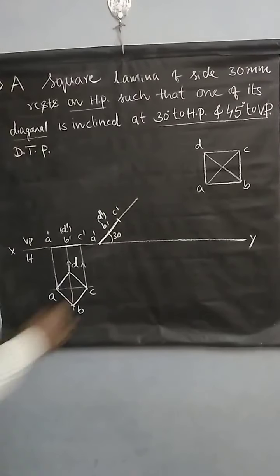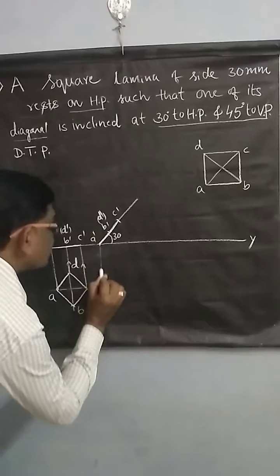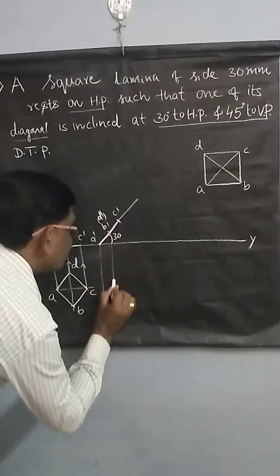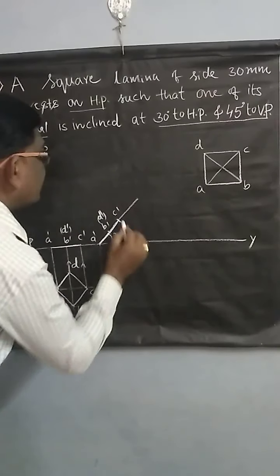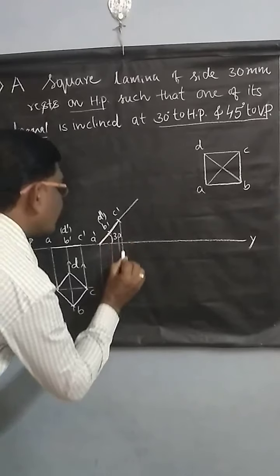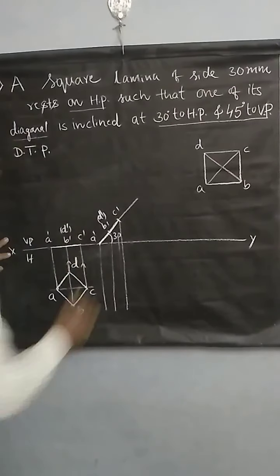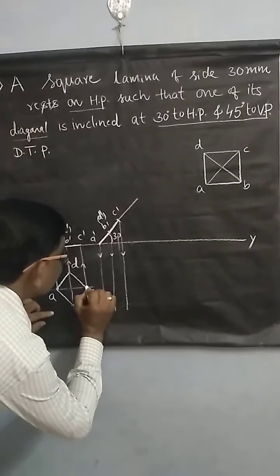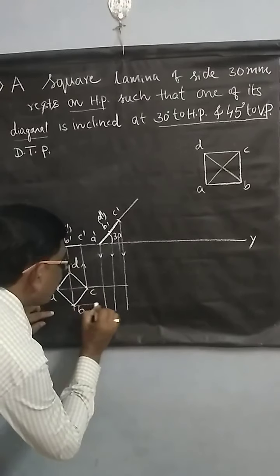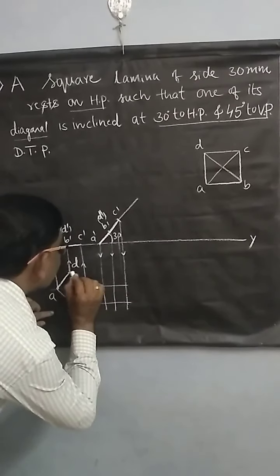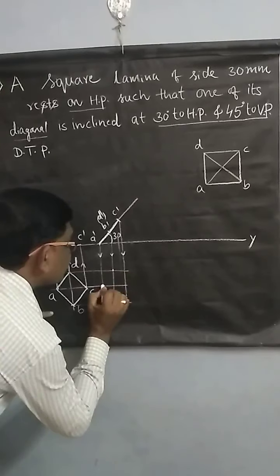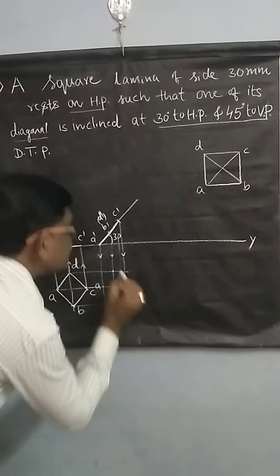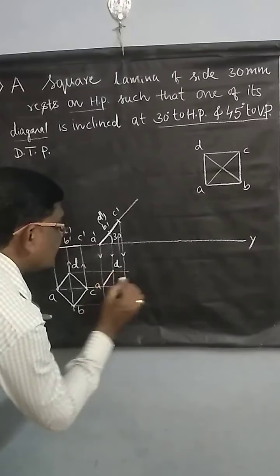Then you draw the top view. Draw the projection lines downwards from all the points. Similarly, draw the projection lines from this top view and mark all the points. This is point A, B, C, and D.